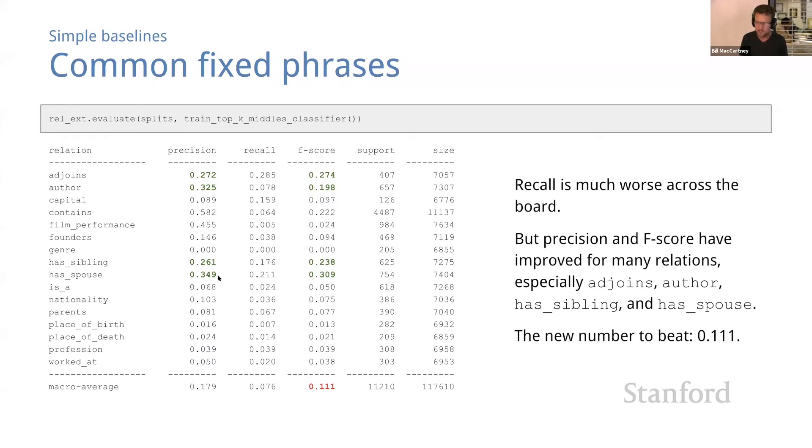Then again, there are many other relations where precision and F-score are still quite poor, including this one genre where we get straight zeros across the board. Although things have improved a lot in some places, they're still rather poor in others. And our macro average F-score has improved only modestly—it improved from 9.7% to 11.1%. We're heading in the right direction, but you'd have to say that's still pretty unimpressive. To make significant gains we're going to need to apply machine learning.